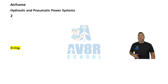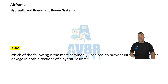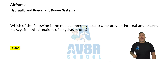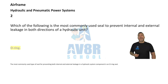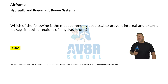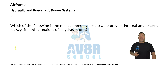Number two: Which of the following is the most commonly used seal to prevent internal and external leakage in both directions of a hydraulic unit? The answer is an O-ring.